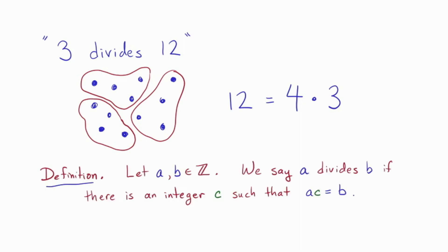Let a and b be integers. We'll say that a divides b if there's an integer c such that a times c is b. So, here we have three divides 12 because I can write 12 as a multiple of three. What am I taking as the c? I'm taking the four.